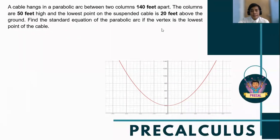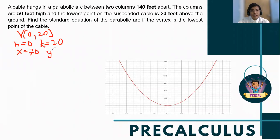To solve the given problem, let's write first the coordinates of the vertex. Again, the vertex is at (0, 20). Therefore, h is equal to 0 and k is equal to 20. Then, the x value is 70 and the y value is 50 which represents the height of the columns.